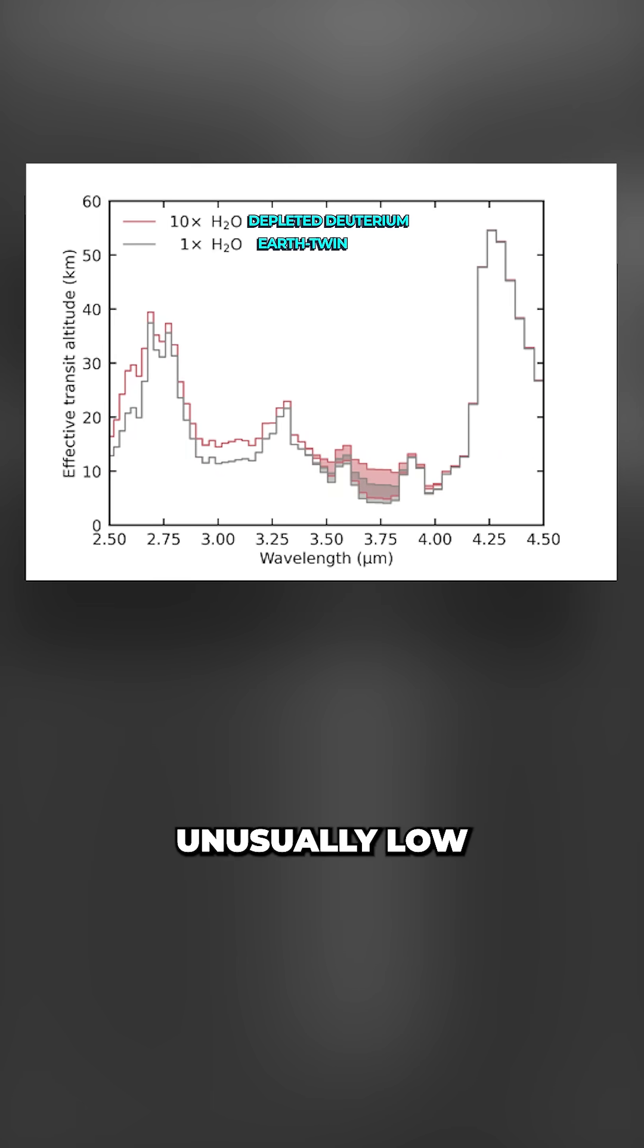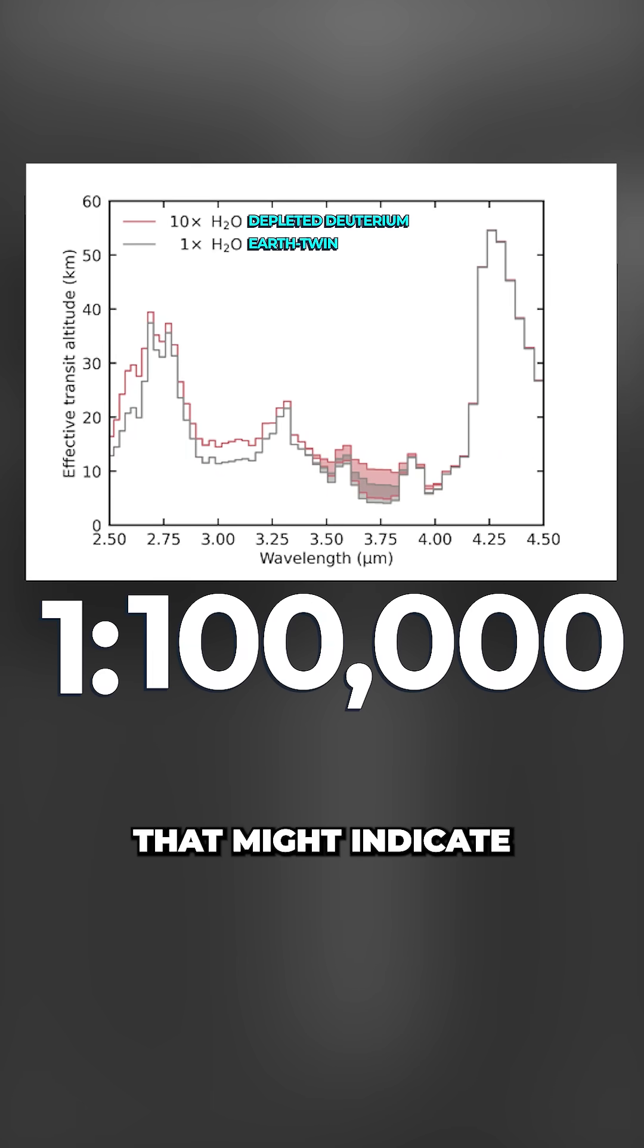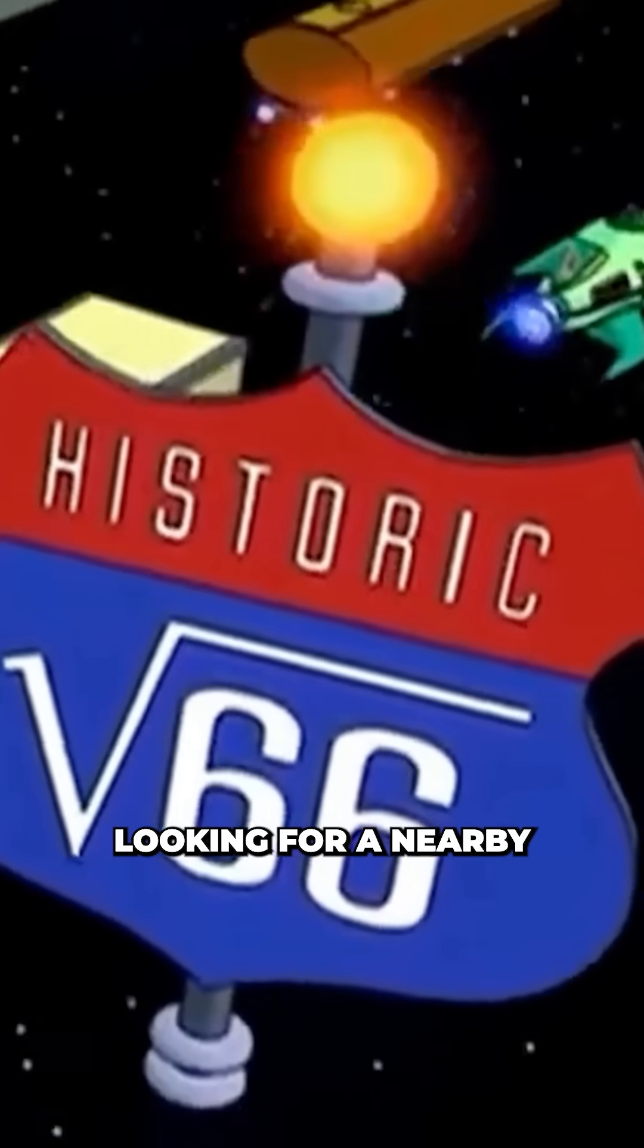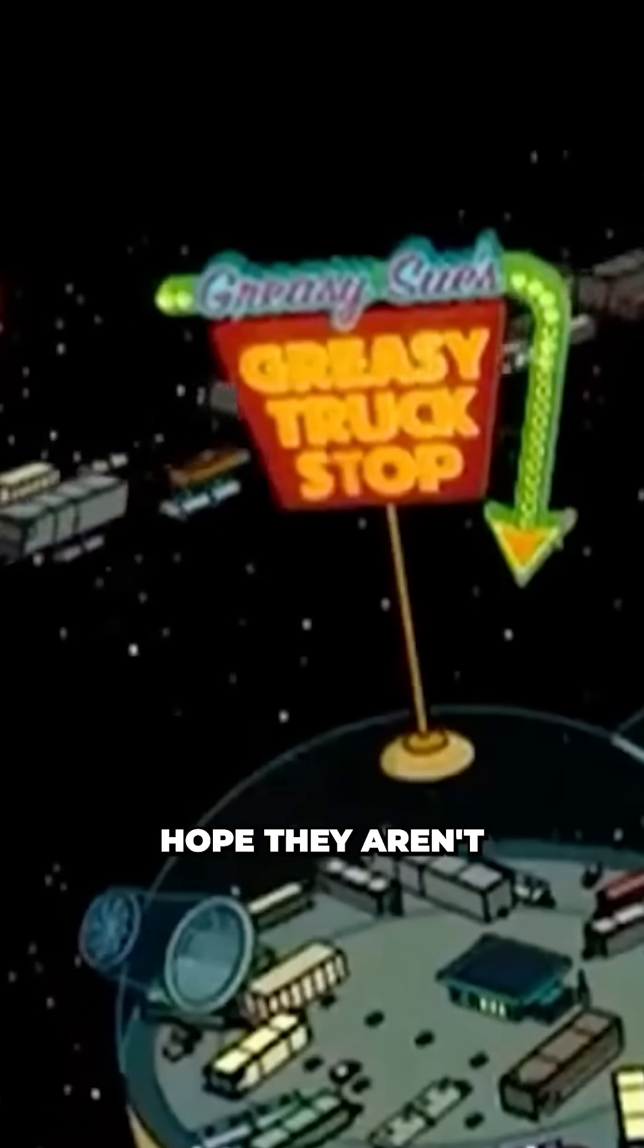If we find a planet with an unusually low deuterium to hydrogen ratio, that might indicate that they ran out of fuel and either died out or left the planet looking for a nearby interstellar gas station. Let's just hope they aren't heading our way.